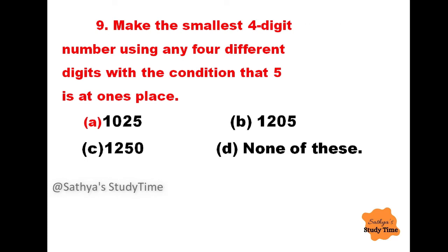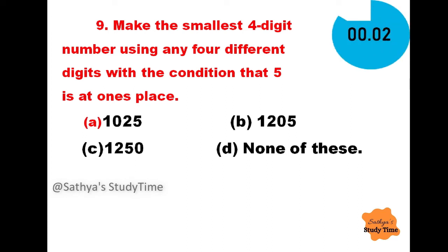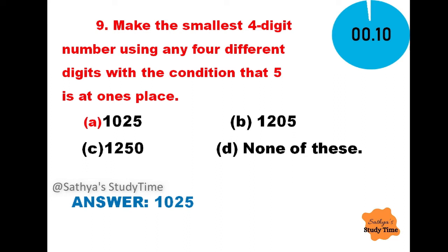Question 9: Make the smallest four-digit number using any four different digits with the condition that 5 is at the ones place. Your time starts now. The answer is 1025.